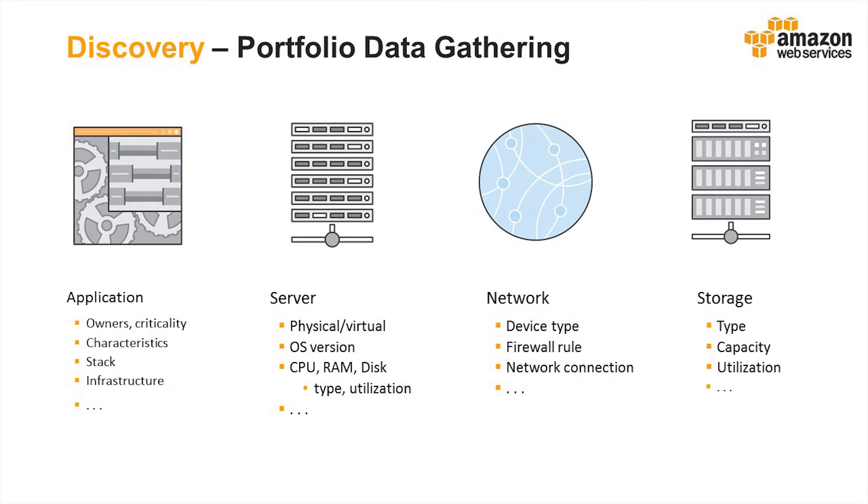Server data such as operating system, CPU, RAM, and disk will determine the image type and VM size to be used in the target cloud. Among the network data, firewall rules will be implemented by ACL or security group in the cloud. For storage, the capacity and utilization data will be used for resource capacity planning during the migration process.